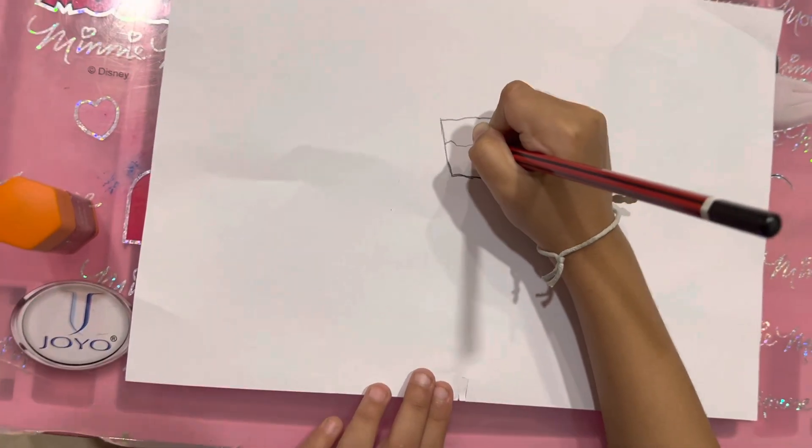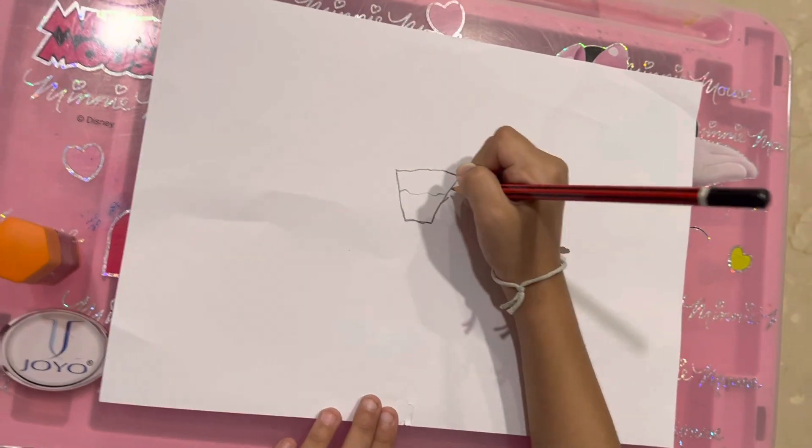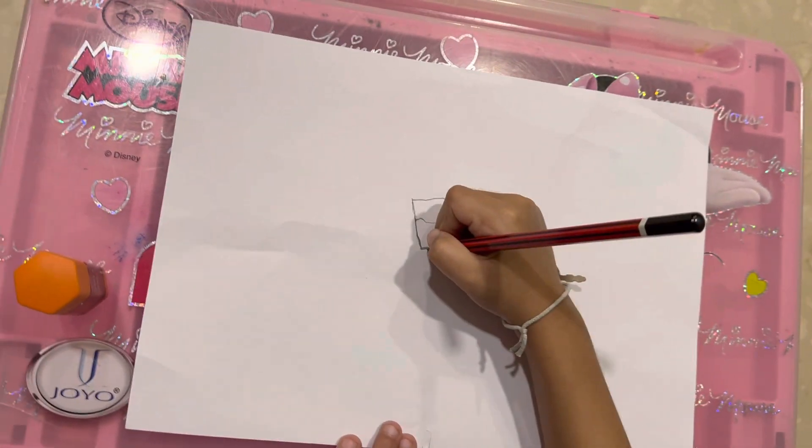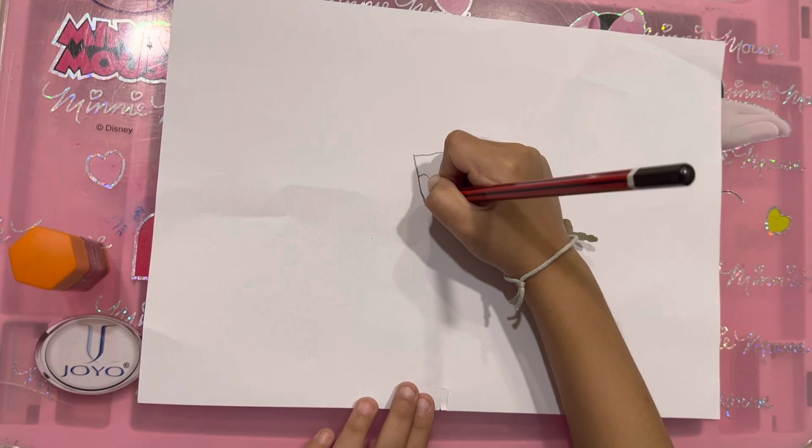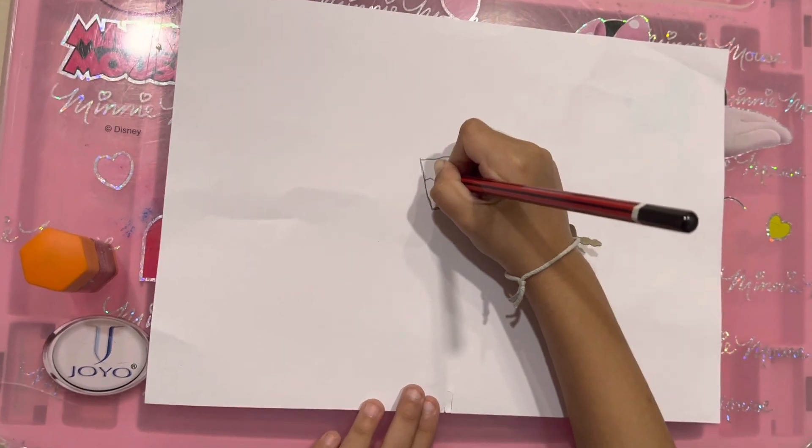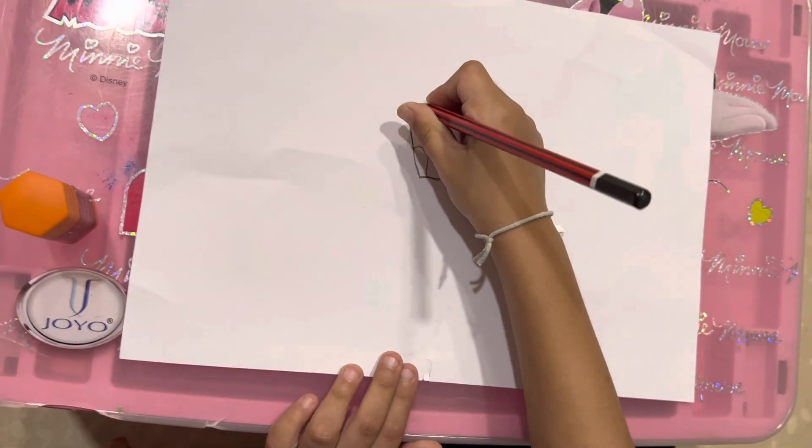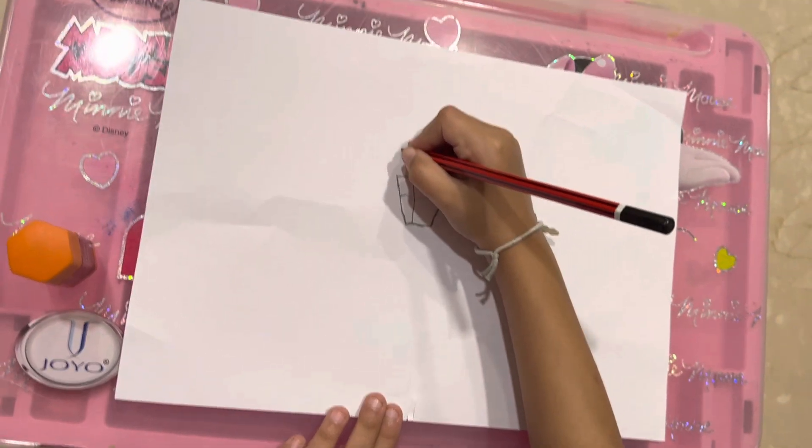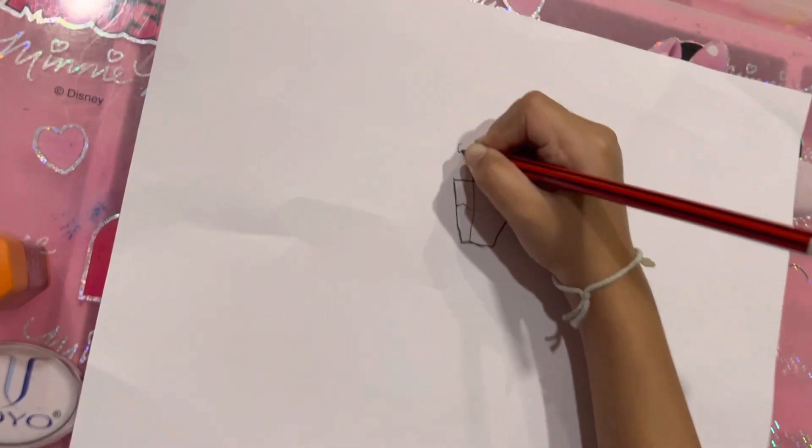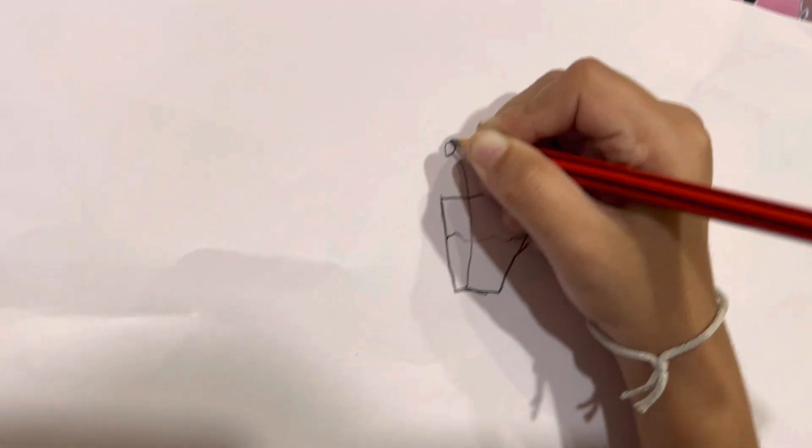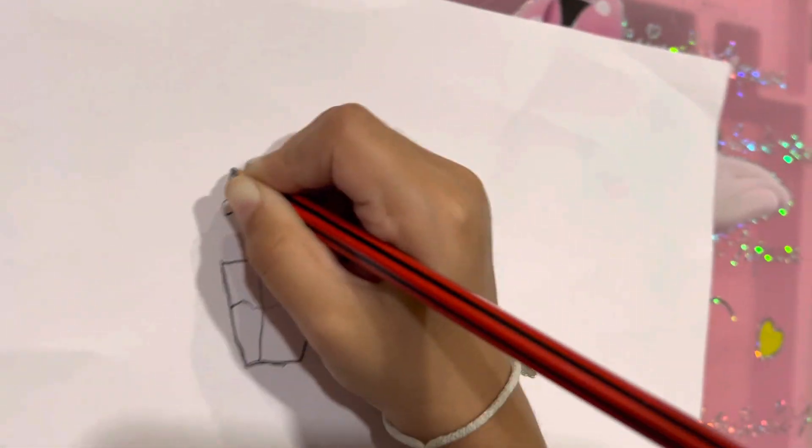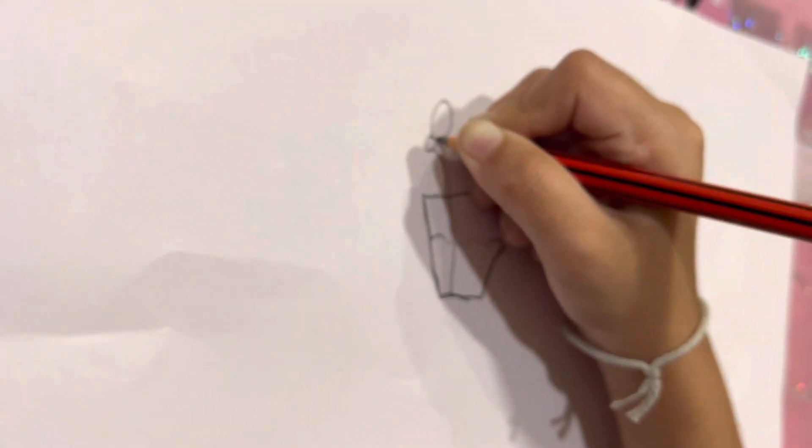First make some sand in the jar. And then make some flowers. And then do like this. Make a circle. And make its petals.